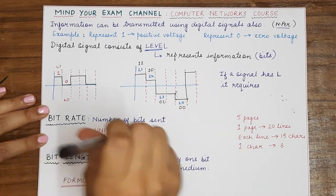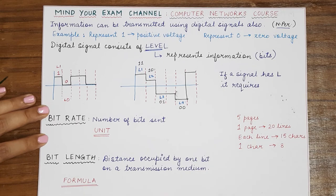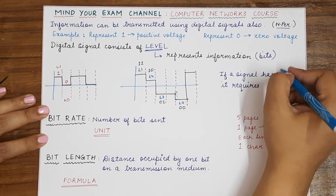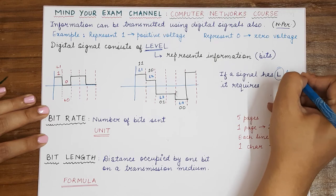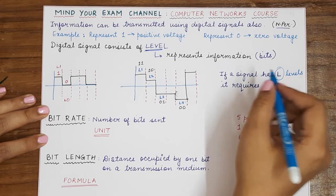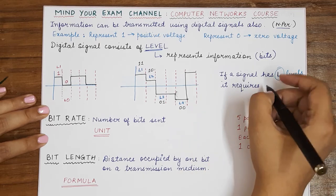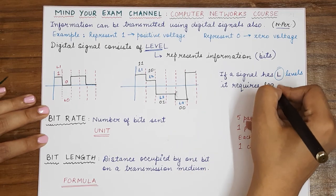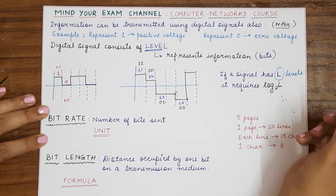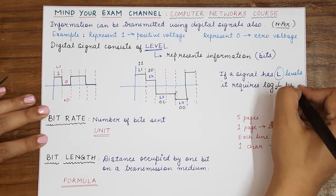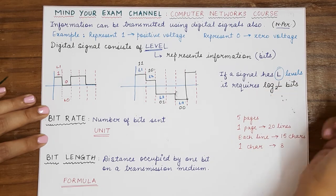So it is very important for you to know that if a signal consists of L number of levels, if a digital signal consists of L number of levels, it will require log L base two number of bits to represent all these levels.